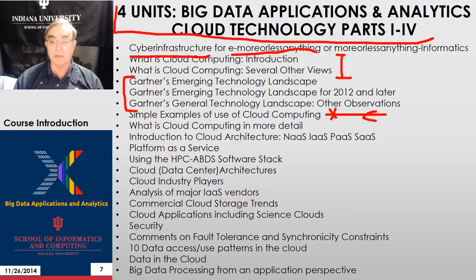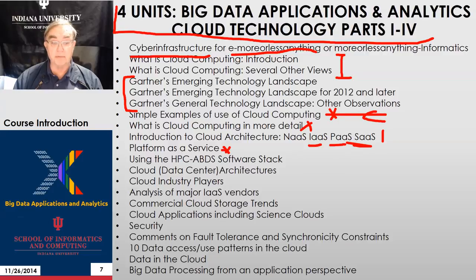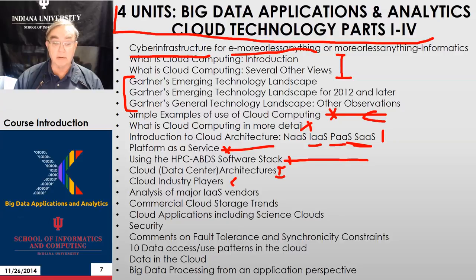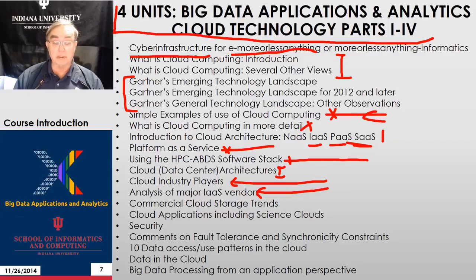We do a couple of simple examples from Microsoft and Google of cloud computing use. Then we go into more detail on cloud architecture, looking at network as a service, infrastructure as a service, platform as a service, and software as a service. We discuss platform as a service in more detail. Then we have a long discussion of the so-called HPC ABDS — Apache Big Data Stack — which provides a software stack with around 300 components that really tells you how big data is processed. We cover cloud architectures, data center architectures, and discussion of the major players. A Gartner analysis covers the major infrastructure-as-a-service vendors, focusing on four: Amazon, the dominant force, Microsoft, Google, and Rackspace.